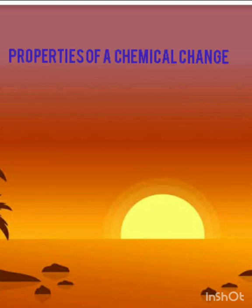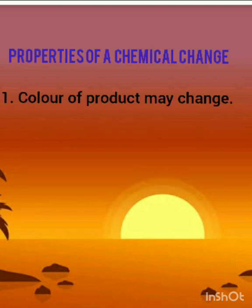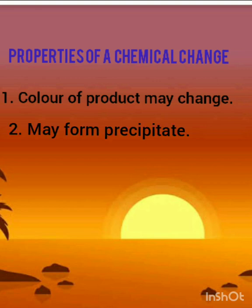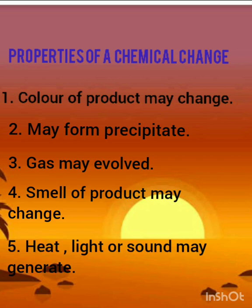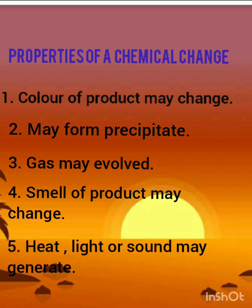In a chemical change, there may be change in the color of the new product, or there may be formation of an insoluble solid at the bottom called as precipitate. There may be evolution of gas, there may be change in the smell of the new substance, or generation of light and sound can be there.